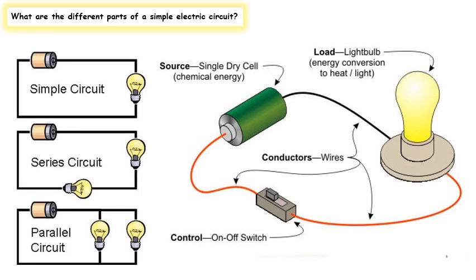Here we can see a simple circuit that consists of a battery, wires, and a light bulb. Here is a second one — this series circuit is made of a battery, wires, and two light bulbs. This one also has two light bulbs connected in a different way, with a battery and wires.